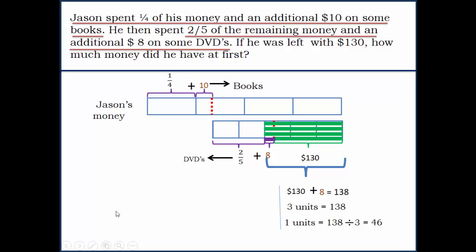Now that should make it clear that if we know one unit is 46, there are totally five units here. This total would be five units, which is 5 times 46, which is $230.